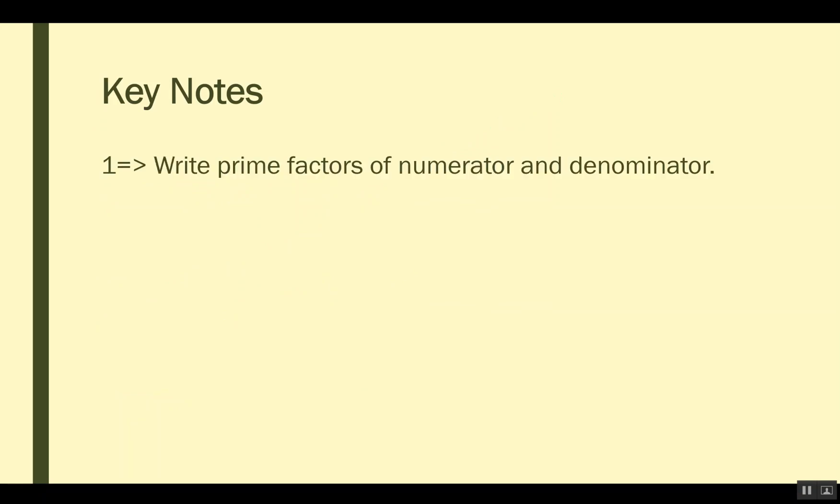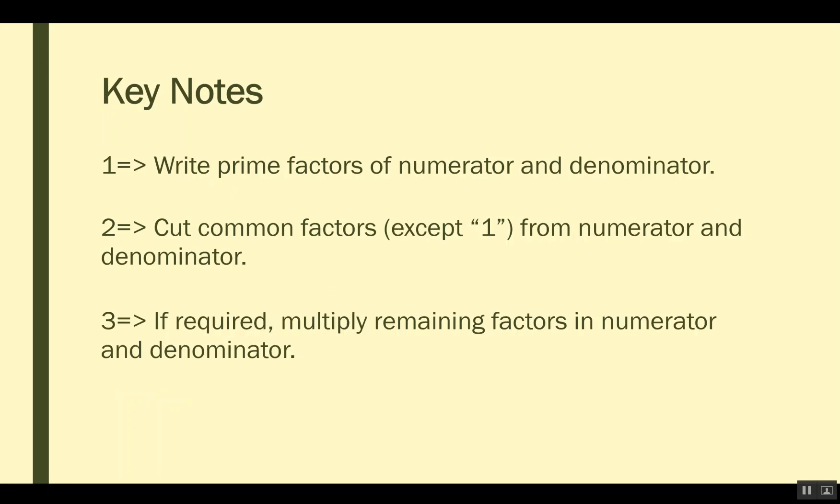First is to write the prime factors of numerator and denominator. Second is to cut common factors except 1 from the numerator and denominator. Third is to multiply the remaining factors in the numerator and denominator.